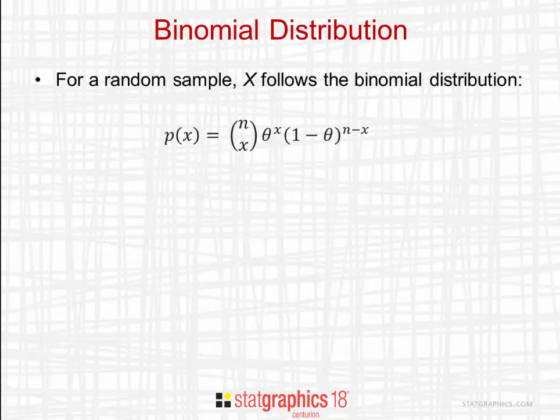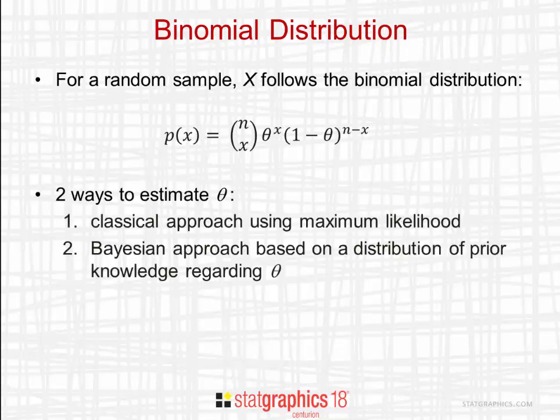The first thing to recognize is that if we take a random sample of n items, then the number of non-conforming items X follows the binomial distribution. There are two methods that we could use to estimate theta. We could use the classical approach, which uses maximum likelihood, or we could use a Bayesian approach based on a distribution of prior knowledge regarding theta.